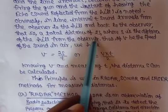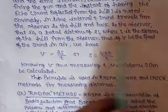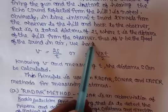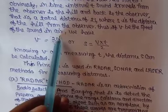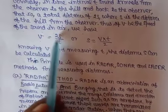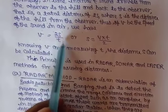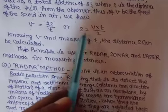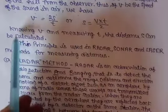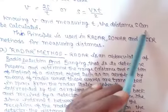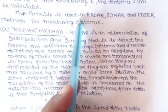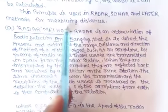In time interval T, sound travels from the observer to the hill and back, a total distance of 2s, where s is the distance of the hill. Thus, if V is the speed of sound in air, then V = 2s/T, or s = VT/2. Knowing V and measuring T, the distance s can be calculated. This principle is used in radar, sonar, and laser methods.